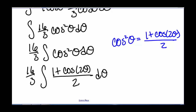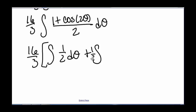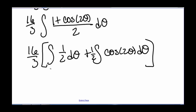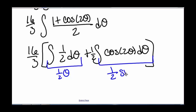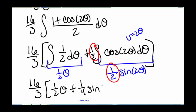This can be written as 16 thirds times the integral of 1 half d theta, plus 1 half times the integral of cosine of 2 theta d theta. The integral of 1 half is going to be 1 half theta, and the integral of cosine of 2 theta is 1 half sine of 2 theta. If you didn't see that right away, remember you could have used u substitution, where u equals 2 theta. So we have 16 thirds times 1 half theta, plus 1 half times 1 half — which is 1 fourth — sine of 2 theta.